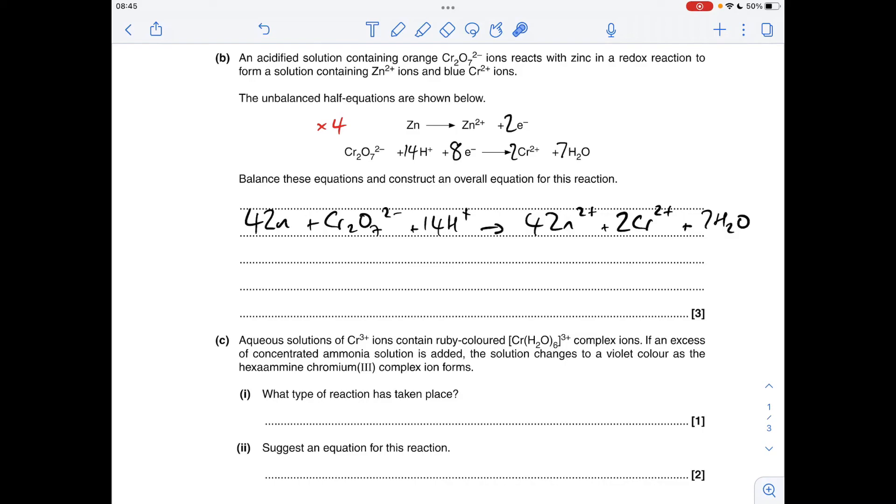Moving on to part C, so we've got to see what type of reaction is taking place. So essentially, all that's happened here is the water ligands, the six water ligands, have been substituted by six ammonia ligands. It says hexamine, so six ammonias are now in this chromium-3 complex after the reaction, so that's ligand substitution.